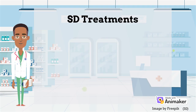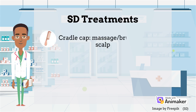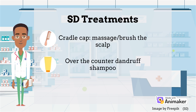Since SD can often be confused with psoriasis, treatments can sometimes be ineffective. It is important to consider who the treatment is intended for. For example, in infants, SD is known as cradle cap. Typically, no treatment is required as it will resolve itself within the first 12 months after birth. In the meantime, using a mild baby shampoo or massaging the scalp gently using a very soft brush can help. Generally, over-the-counter shampoos and topical medications are usually enough to improve flaking and soothe itching.